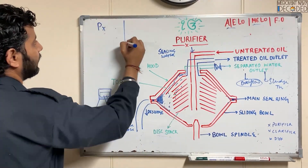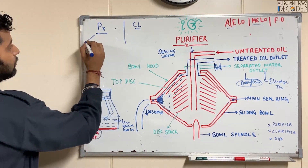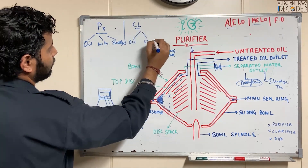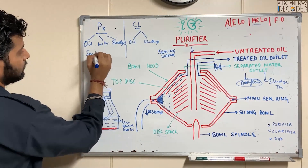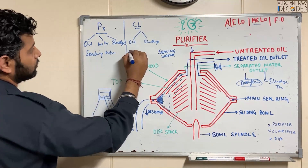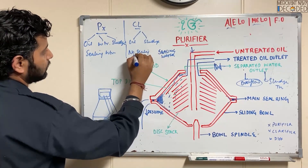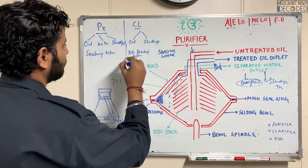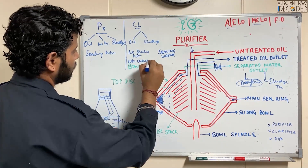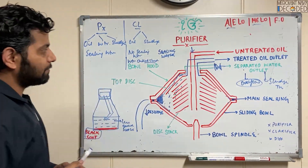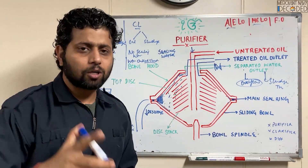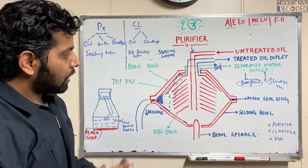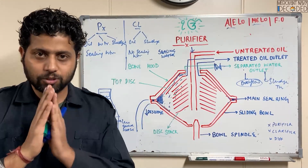So to summarize: a purifier separates oil, water, and sludge. A clarifier separates oil and sludge only. A purifier requires sealing water; a clarifier does not require sealing water. In a clarifier, a clarifier disc is used to shut the water outlet. I'll explain the clarifier disc concept further when I discuss the gravity disc in another video. This is the key difference between a purifier and a clarifier. Thank you very much.